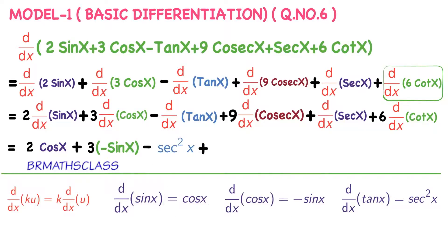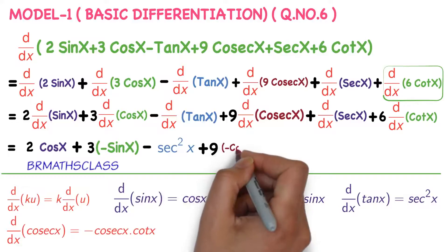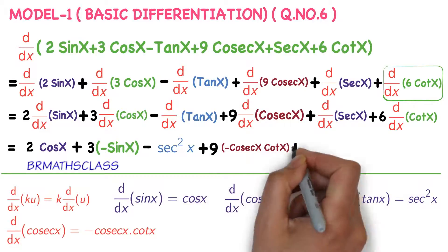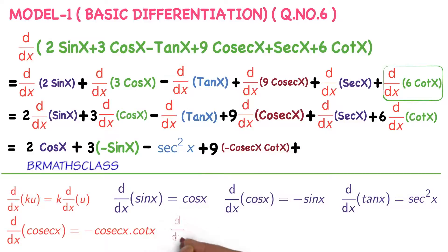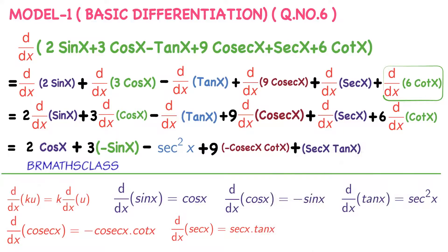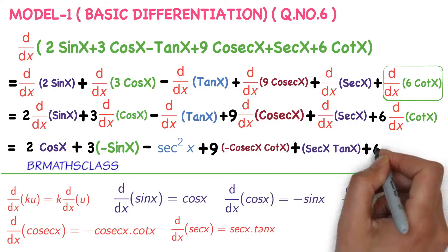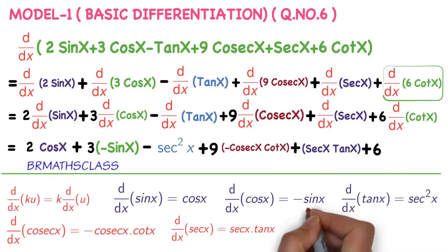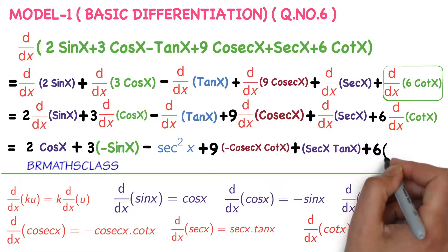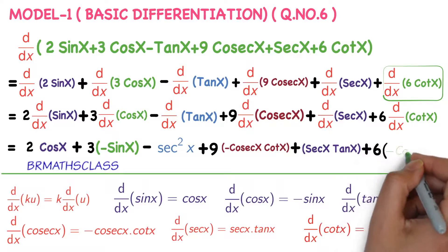Plus 9 into derivative of cosecant x: derivative of cosecant x is minus cosecant x into cot x. Plus derivative of secant x: derivative of secant x is secant x into tan x. Plus 6 into derivative of cot x: derivative of cot x is minus cosecant square x.